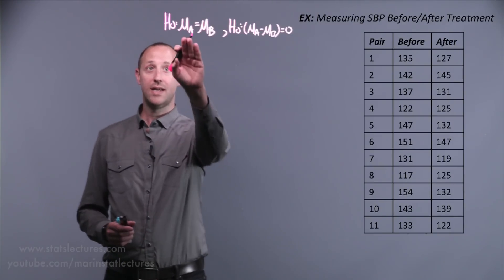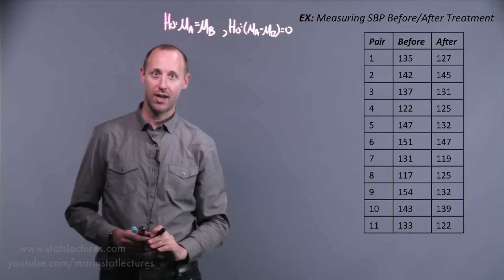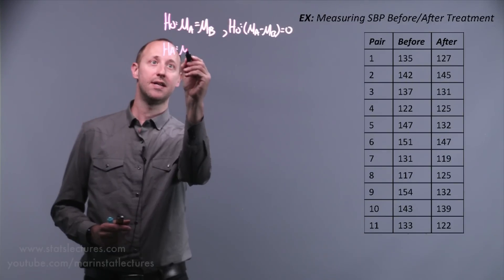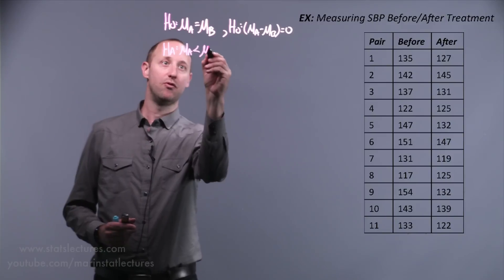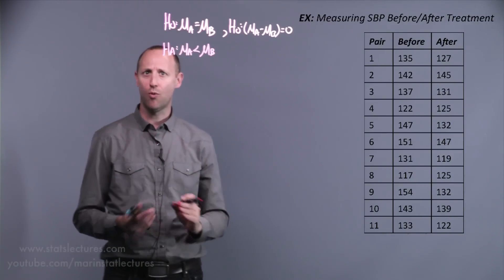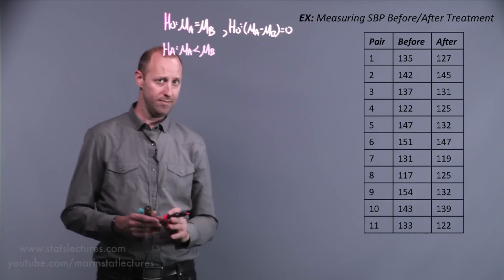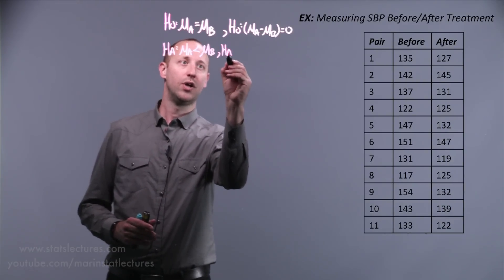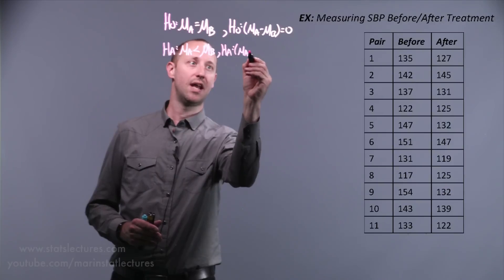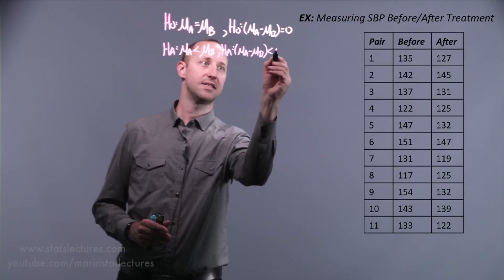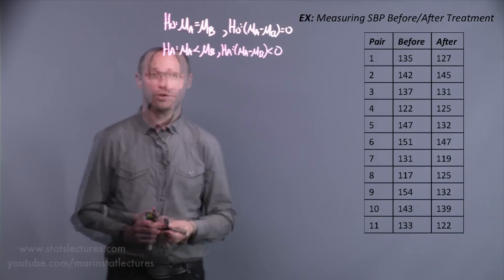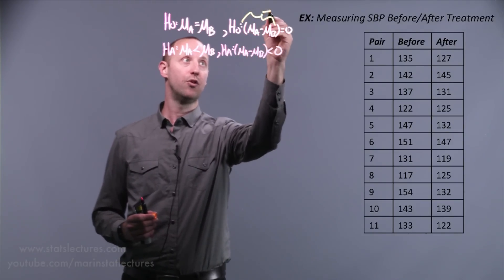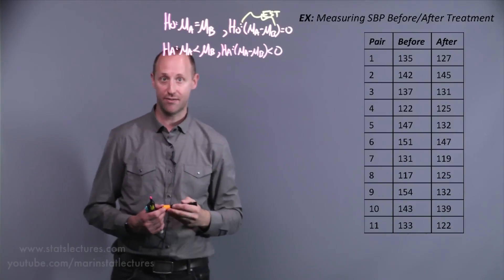Recall that in hypothesis testing, we start by assuming the null is true and then see if we can provide evidence against it. The alternative hypothesis is that the mean after is less than the mean before — a one-sided test, though we could easily write it as two-sided. We can also express this as: the difference in after minus before is less than zero, meaning on average there was a decrease. Expressing it this way boils it down to a single number — the difference in means.